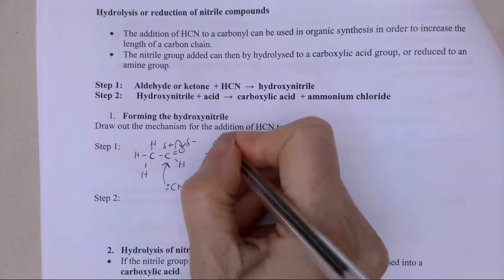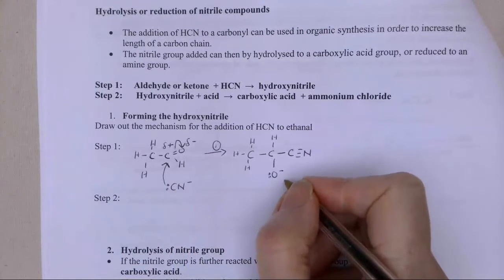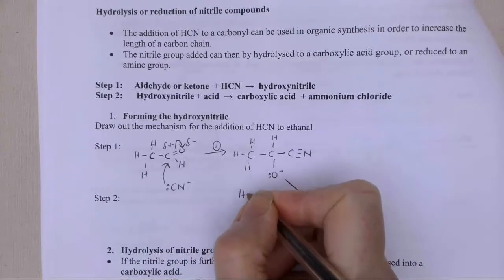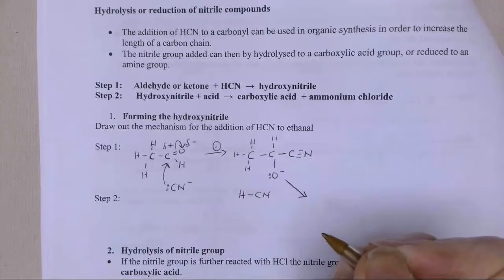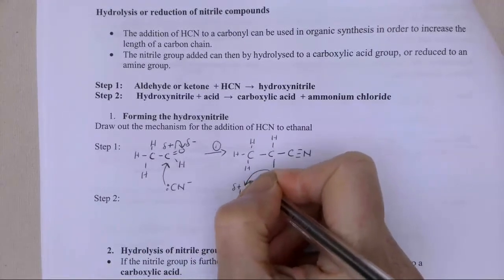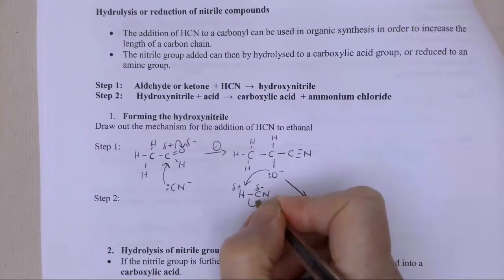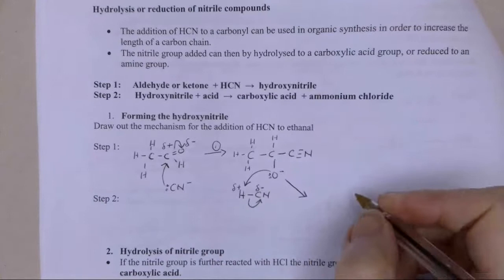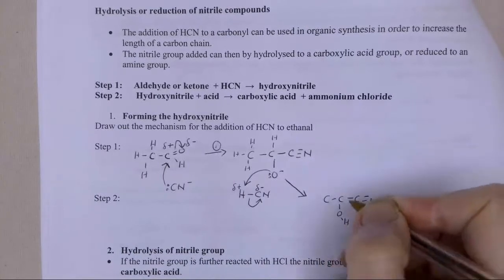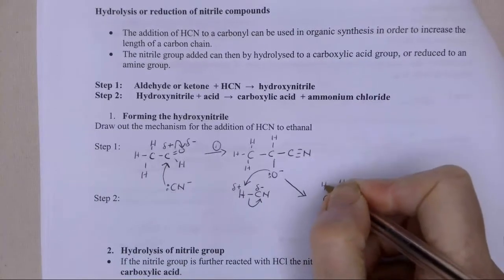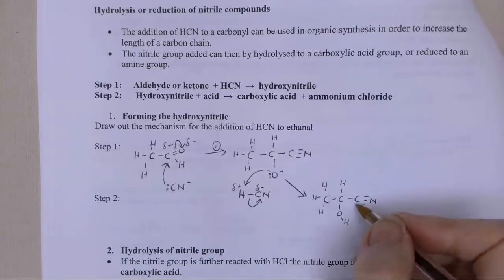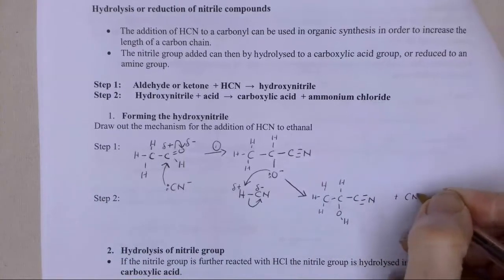In step two, I've got my HCN molecule. I've got a dipole here - delta positive, delta negative. This lone pair is going to grab that delta positive hydrogen, pushes the electrons completely onto that cyanide group, and I get my product. I've got my hydroxy on my second carbon. So this would be 2-hydroxypropane nitrile, because now I've got three carbons in my chain, and I've regenerated my cyanide ion.